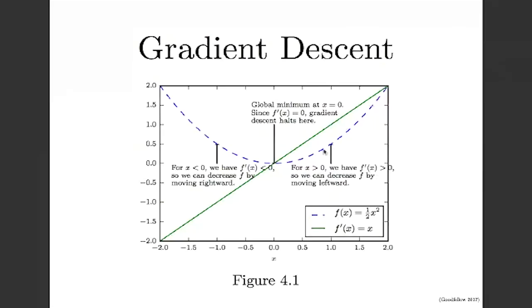Where the derivative is zero, we are no longer told to move in any particular direction, so we stop. If we start on the left side where the derivative is negative, we move in the opposite direction of the derivative — we apply positive updates to x and move rightward along x² until we reach the minimum where the derivative equals zero.